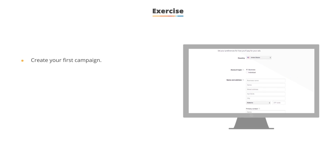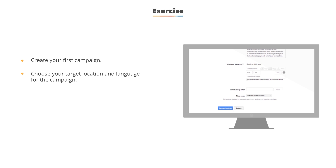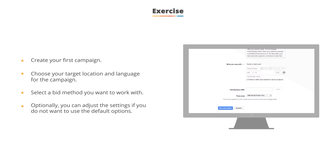Go to the Google Ads website and create your first campaign. Choose your target location and languages for the campaign. Then pick a bid method you want to work with. Optionally, you can adjust other settings if you don't want to use the default options. After doing so, you'll have your first campaign configured.